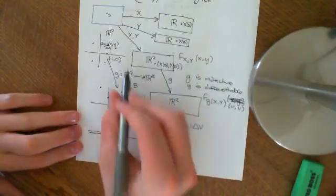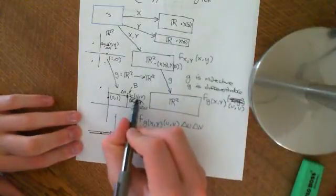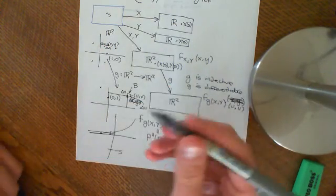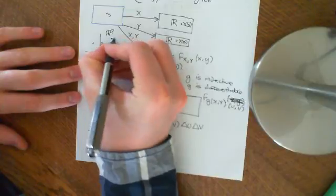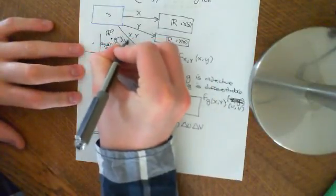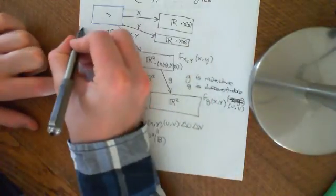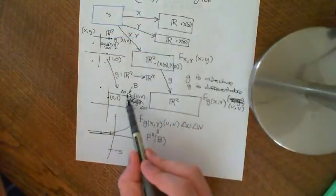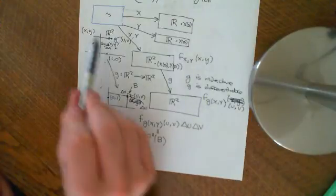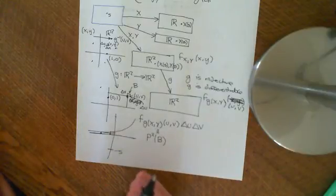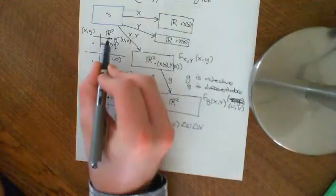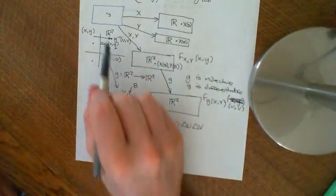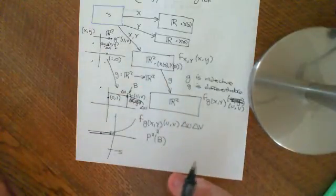If we've insisted that g is injective, then either (u, v) has an inverse image in the R² plane or it doesn't. If it doesn't, we declare the probability density function to be zero there. If it does, we take that pre-image — call it g⁻¹(u, v) — and call that point (x, y) in the original probability space. Now we need to work out what this little box becomes in the original probability space. How do you convert this box back? We have to use a concept called the Jacobian, and we'll explore that in the next video.